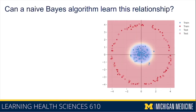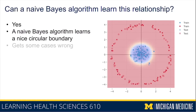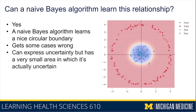Can a naive Bayes algorithm learn this relationship? Yes — it also learns a curve, producing a nice circular boundary. It does get a handful of cases wrong, with a few blue dots sitting in red territory. It can express uncertainty, but there is a very small area of uncertainty — a very thin ring of yellow — where it's unsure whether the patient is healthy or ill.